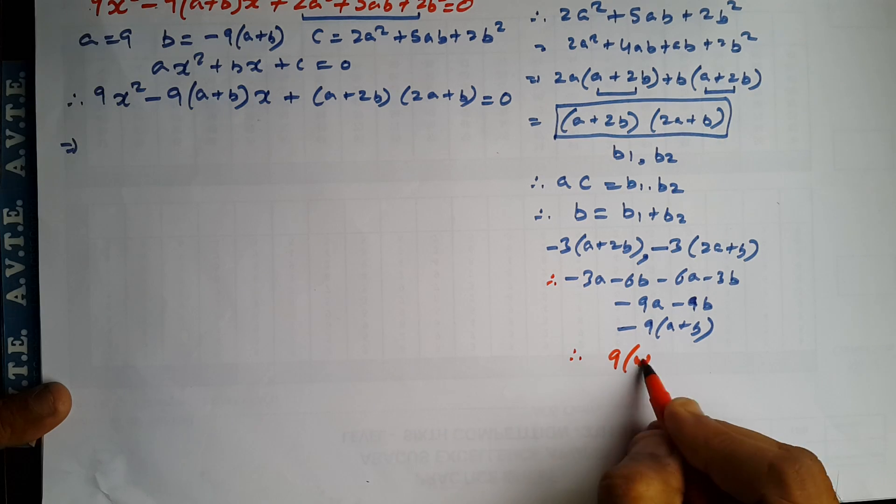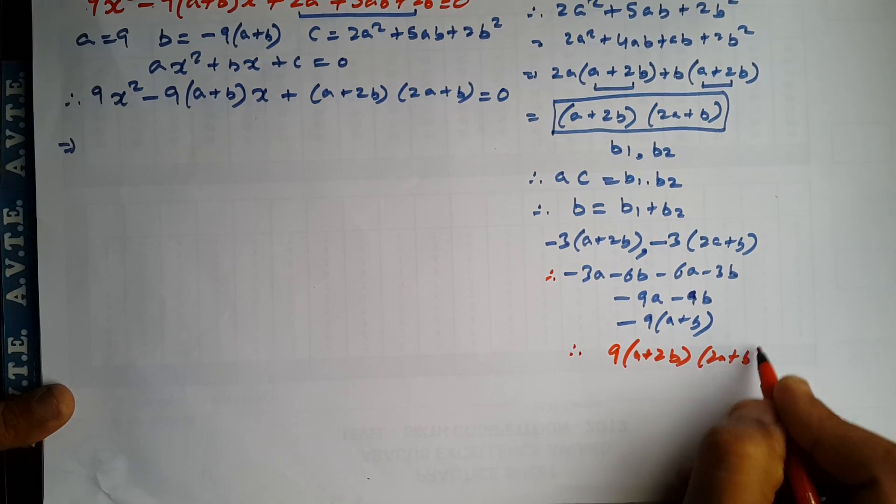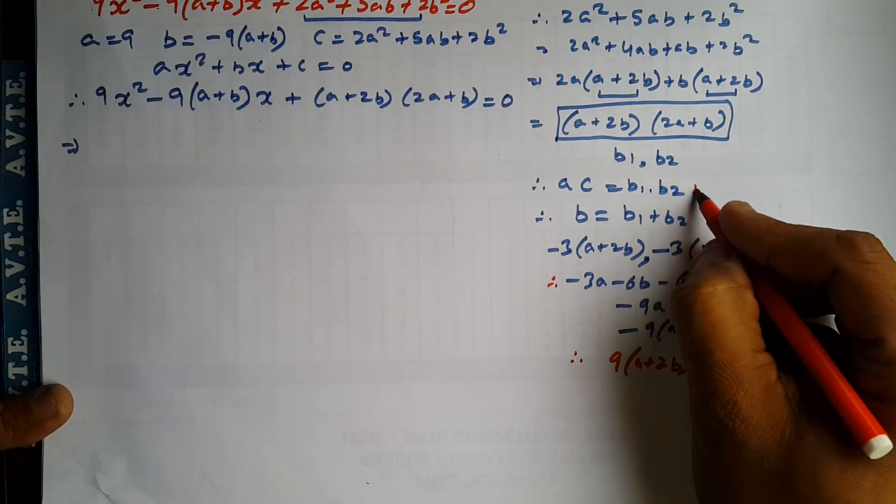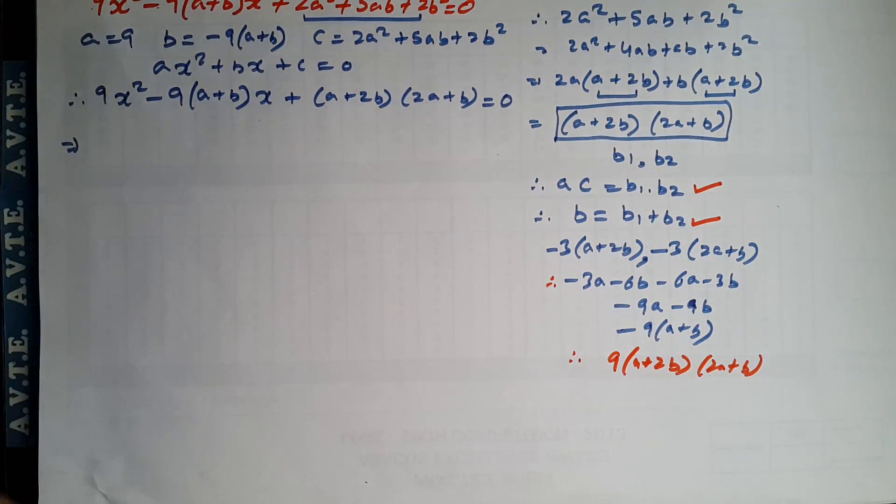And A plus 2B into 2A plus B. This is a AC. So this condition verified this and this condition verified this.